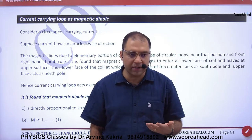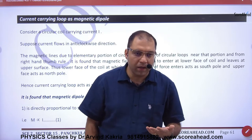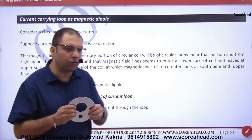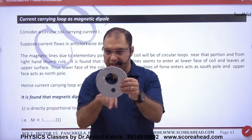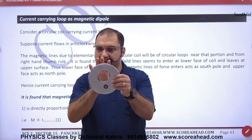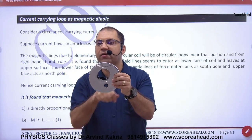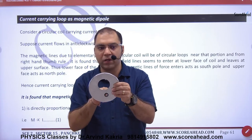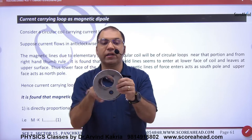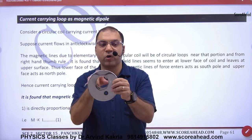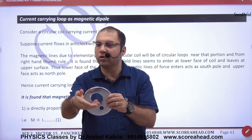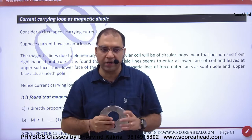How do we decide? If you have a current-carrying loop such that the current is clockwise, then that face will act like a south pole. But the other end is anticlockwise, so when you look at that pole it will be north. So one side is south-end, one side is north.